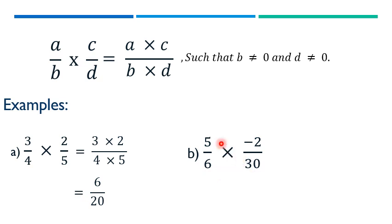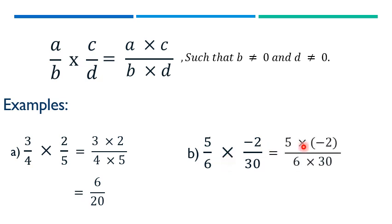Another example: 5 over 6 times minus 2 over 30. We multiply numerators and denominators together: 5 times minus 2 over 6 times 30, giving minus 10 over 180.